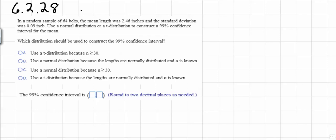In a random sample of 64 bolts, the mean length was 2.46 inches and the standard deviation was 0.09 inch. Use a normal distribution or a t-distribution to construct a 99% confidence interval for the mean.